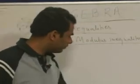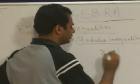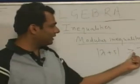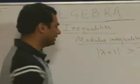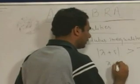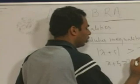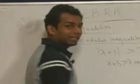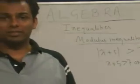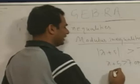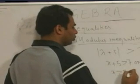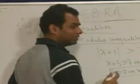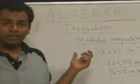If instead |x + 5| > 7 — in a modulus function with a greater-than sign, straight away we can say x + 5 > 7 or x + 5 < −7. The value never lies between −7 and +7. From here we get x > 2 or x < −12. This is the condition for the modulus inequality.